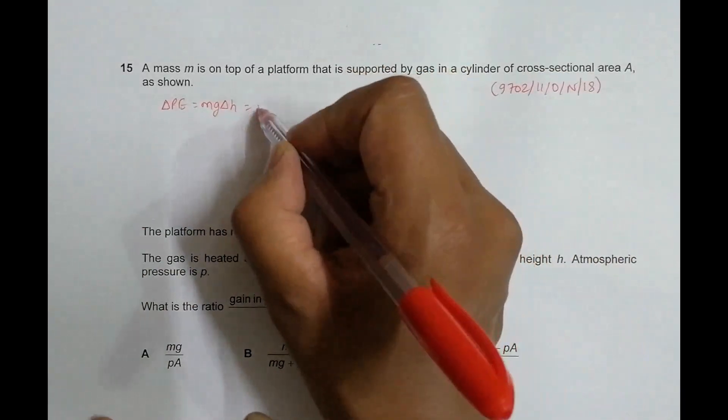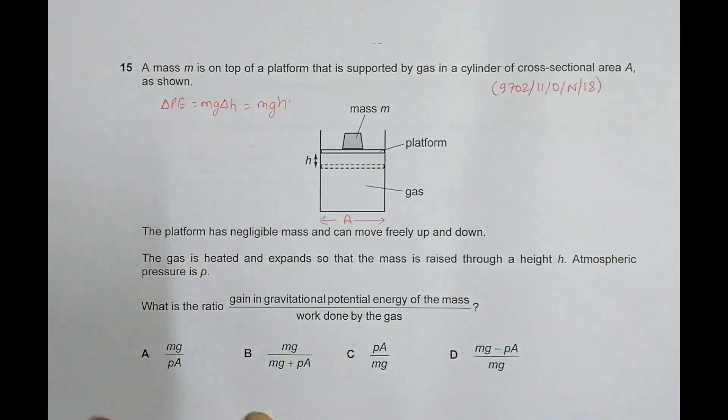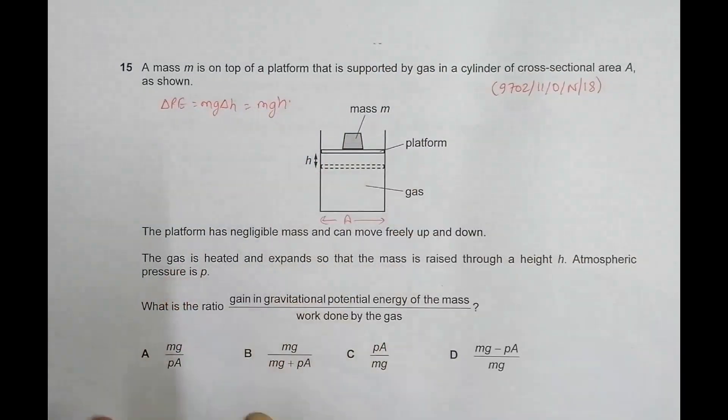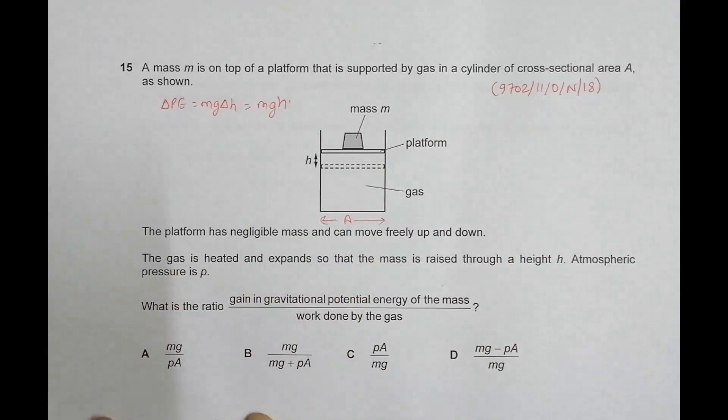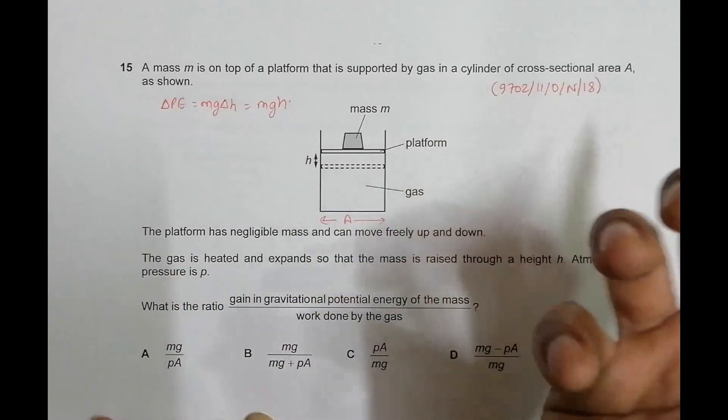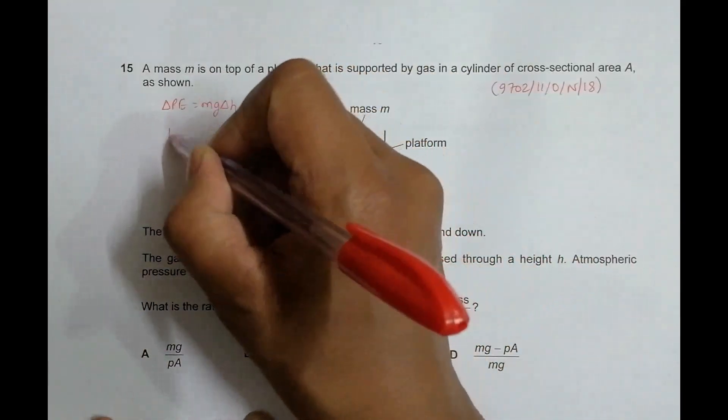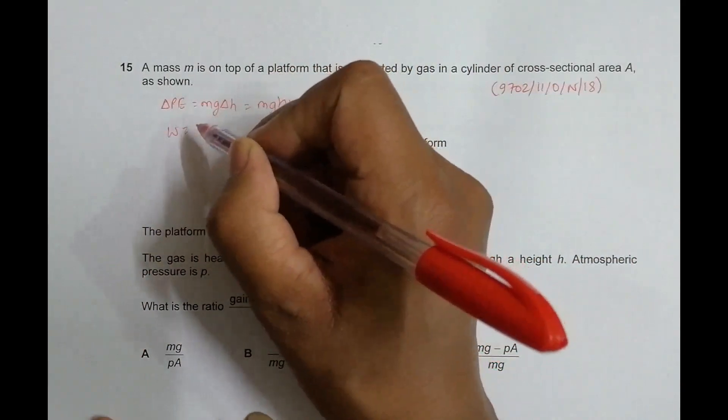Now, work done by the gas. The work done by the gas has done two things here: one is expansion, and one is it has worked against gravitational attraction. So the work it has done is equal to work done for expansion plus work to overcome the gravitational energy.